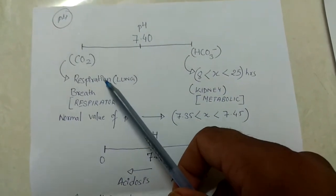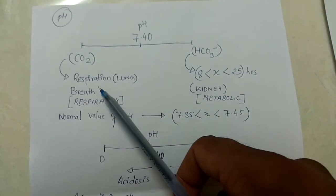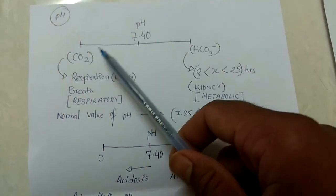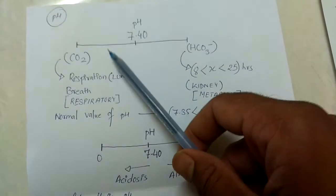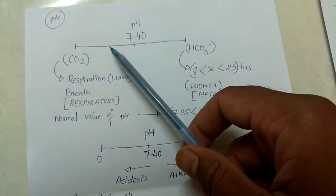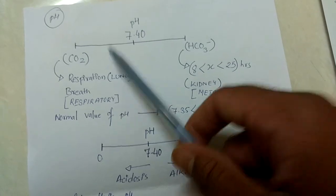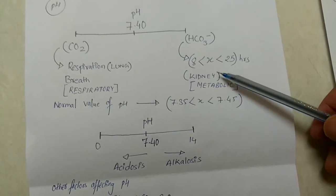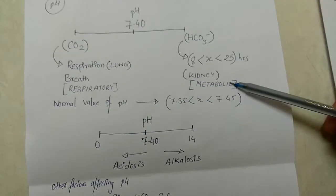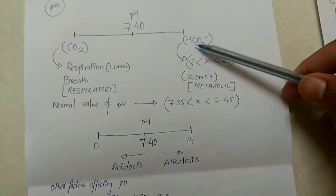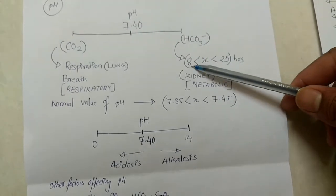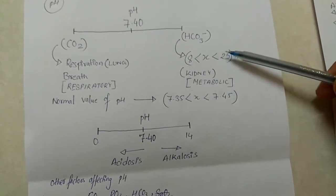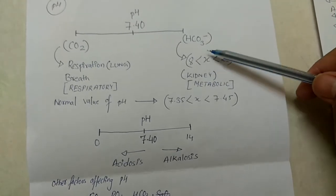CO2 exchange happens in the lungs, so this function is related to respiration. If CO2 is acidic it will be termed as respiratory acidosis or respiratory alkalosis. HCO3 ion is controlled by the kidney, so this is metabolic. It may take 8 to 225 hours to compensate or have a change in the HCO3 ion because it is metabolic.